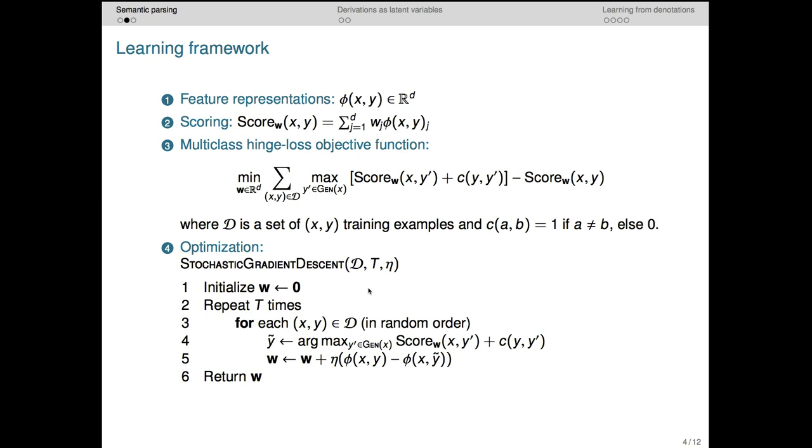The algorithm starts with an all-zero weight vector and then does t many iterations through the data d, shuffling d at each pass.